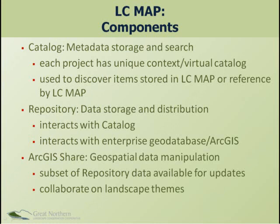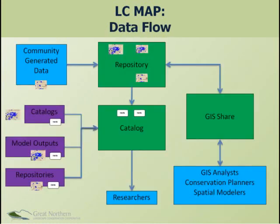Another component is a repository — a data storage and distribution mechanism for native items that the conservation cooperatives are building themselves. This interacts with the catalog, which will capture and store the metadata for every item and allow outside researchers to search and find these data. It also interacts with an enterprise geodatabase — an ArcGIS Server instance. This ArcGIS share lets groups do standard geospatial data manipulation; it works on a subset of the repository data, so people can put data in the repository and make it available for sharing and building derivative products within ArcGIS.